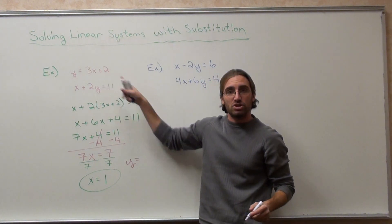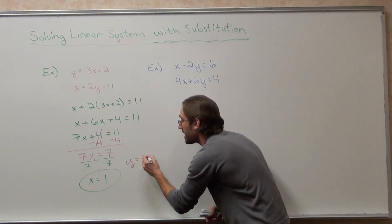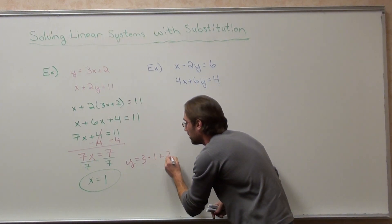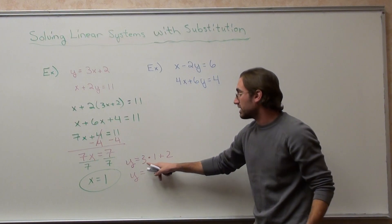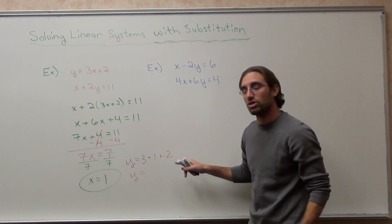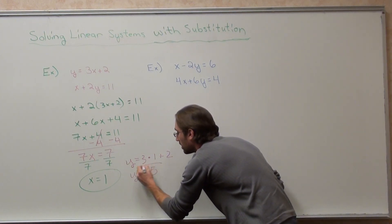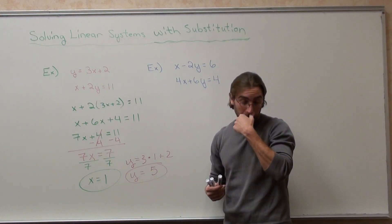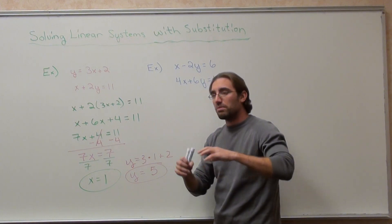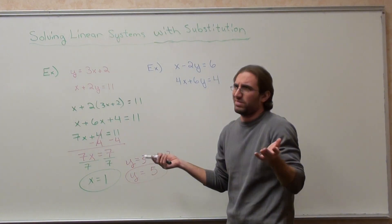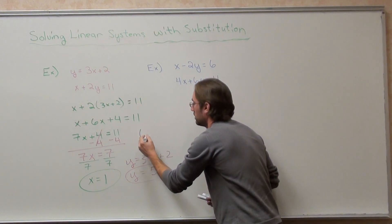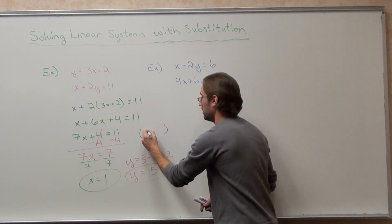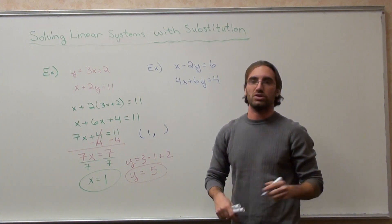Y equals 3x plus 2. But the x is not x anymore. It's 1 plus 2. 3 times 1 is 3. 3 plus 2 is 5. Now, if your teacher is very picky, what they're going to ask you to do, pardon me, is put it in coordinate form. So, that's not really a big deal. You put it in a set of coordinates. The x value goes first, which is 1. The y value goes second, which is 5.